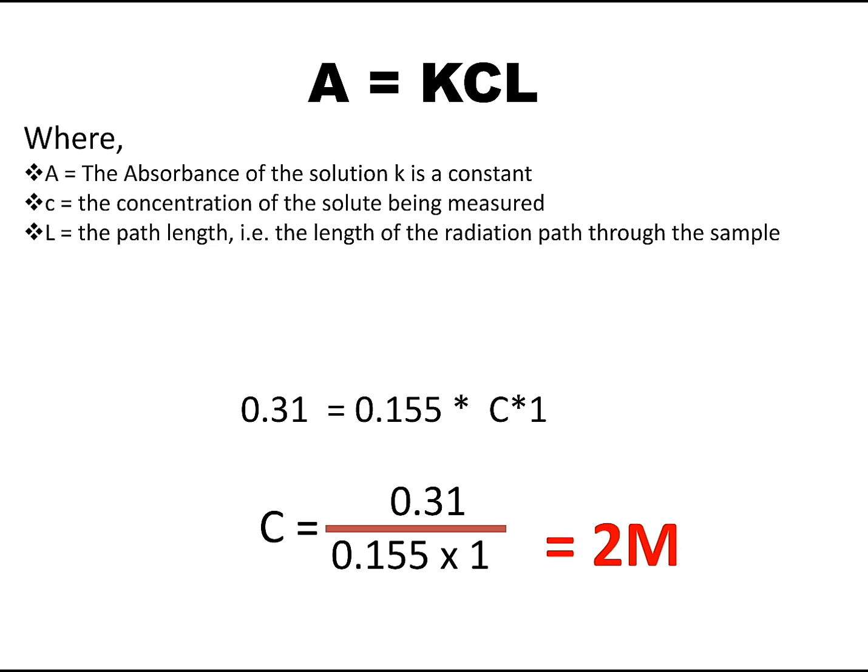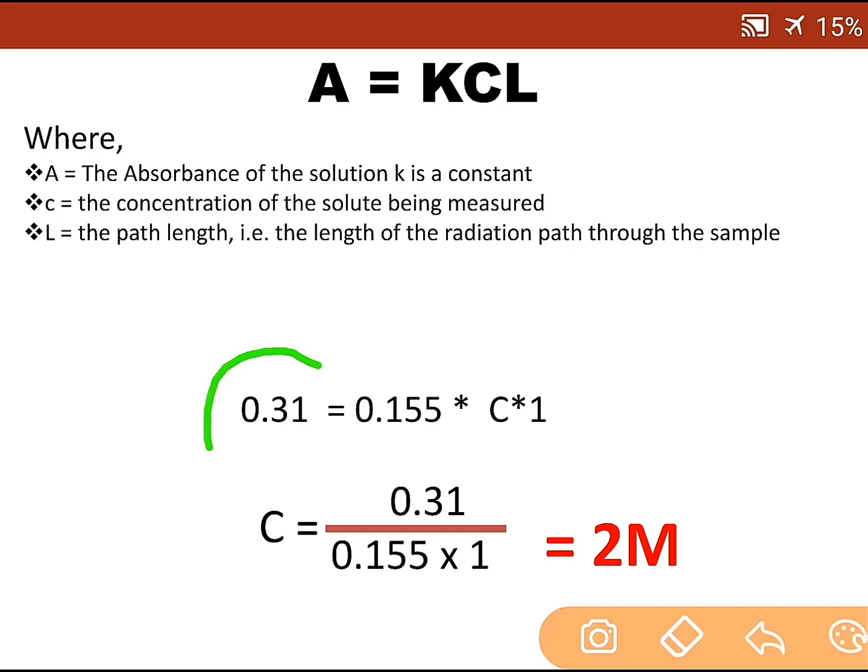In this question, A is given as 0.31, K is given as 0.155, C we have to calculate, and the path length is 1 cm. After putting all these values in the formula